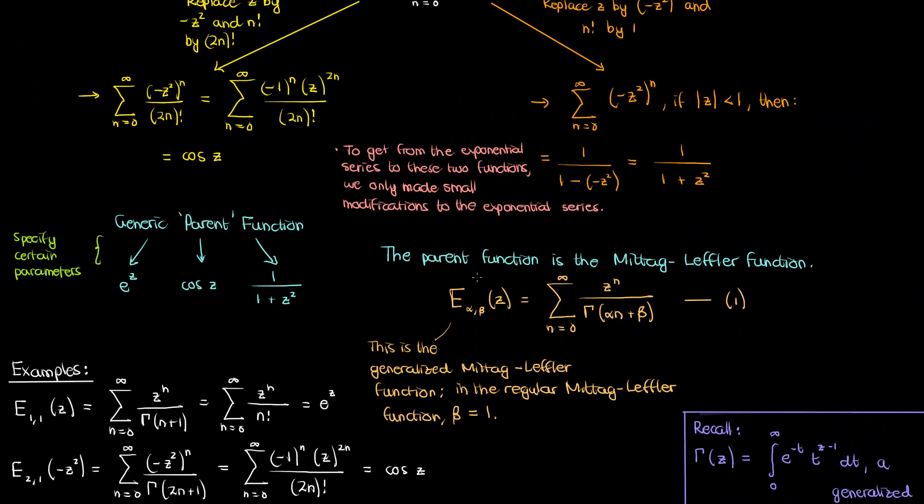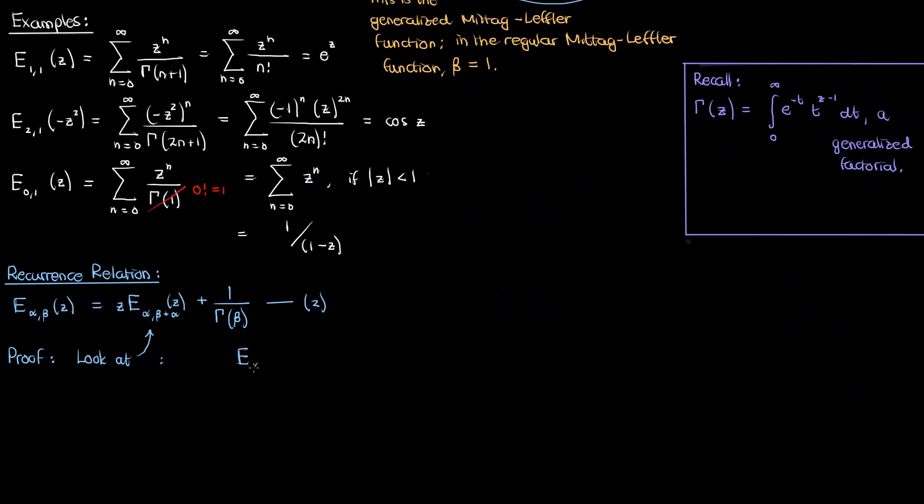We know from the definition of the Mittag-Leffler function that if E at alpha and beta is given by this, then E at alpha and beta plus alpha will be given by the following. I'll multiply both sides by z now to get the first term on the right hand side of this recurrence relation. Then if I move my z on the right to the inside of the summation, I get a power of n plus 1 on the z, and if I also take the alpha common in the gamma function term in the denominator, I get alpha multiplying n plus 1 this time.